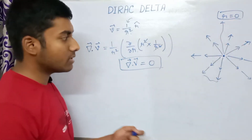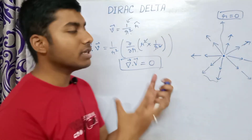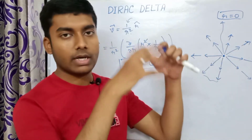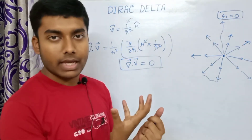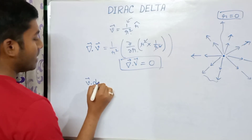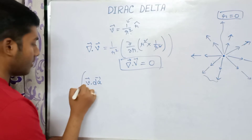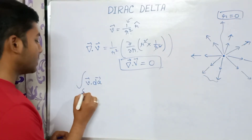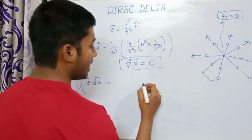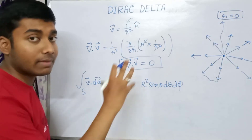But we understand physically that it cannot be zero — this is a high divergence area. Now, if we imagine a hollow sphere around the charge and calculate the surface integral ∮v·da, where da = r² sinθ dθ dφ r̂ in spherical polar coordinates, we integrate over the surface of that imaginary sphere.